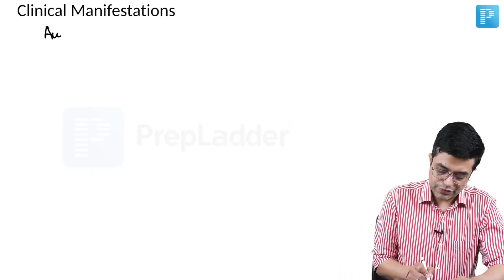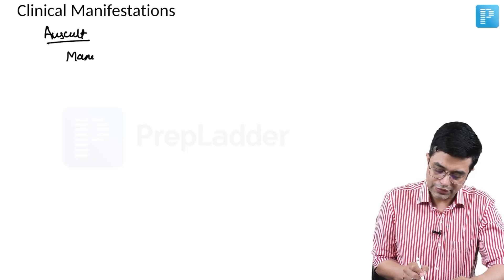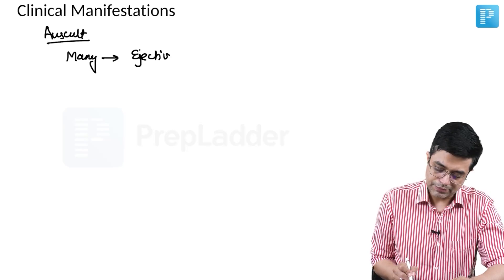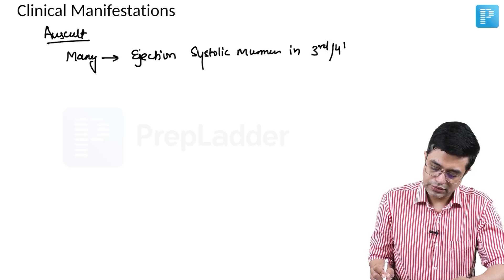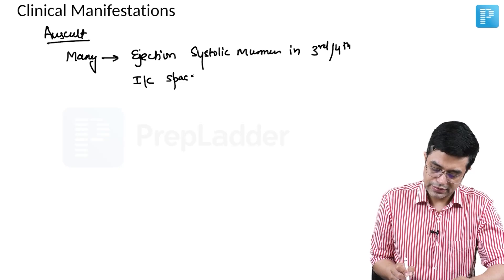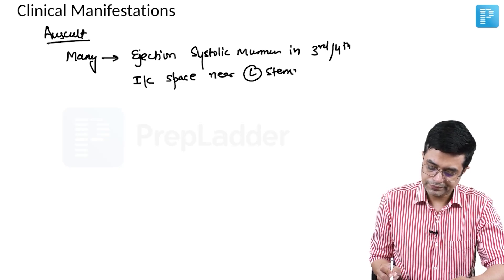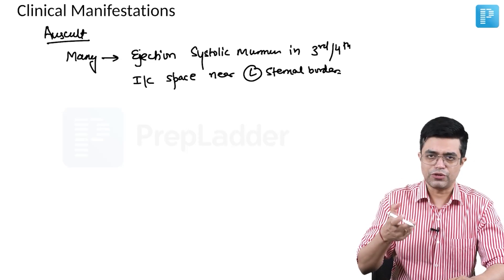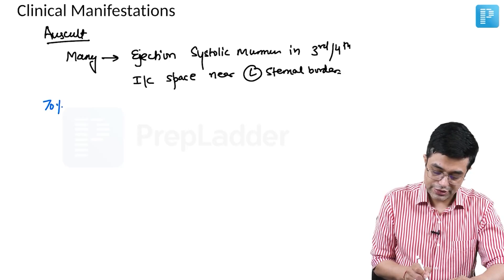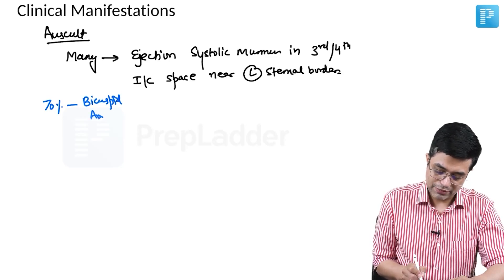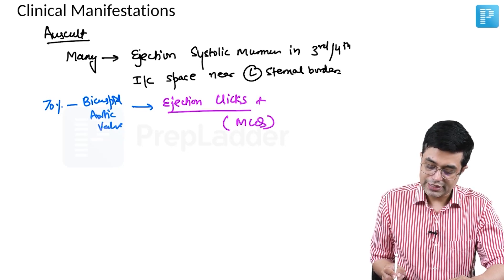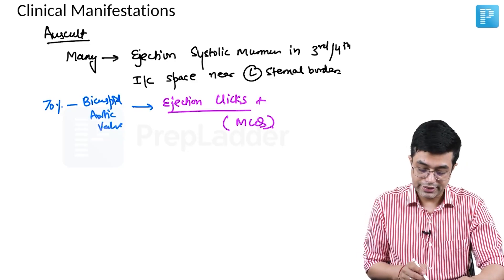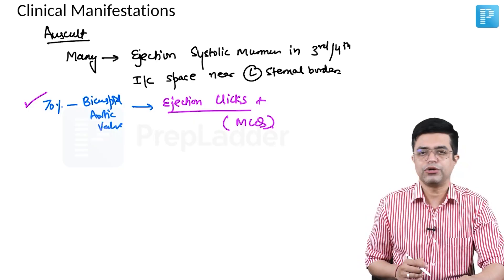Coarctation of aorta: on auscultation, many patients will have an ejection systolic murmur in the third or fourth intercostal space near the left sternal border, due to narrowing and turbulence. Since 70% of patients also have a bicuspid aortic valve, these children will additionally show ejection clicks. This is a potential MCQ point: presence of ejection clicks in coarctation of aorta indicates the presence of an underlying bicuspid aortic valve.